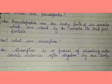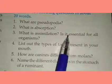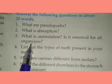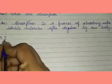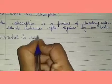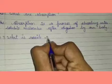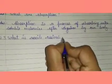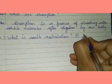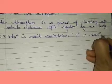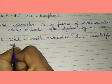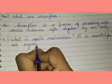Now we will write question number three. Our question number three is: What is assimilation? It is essential for all organisms. Write question number three: What is assimilation? It is essential for all organisms.